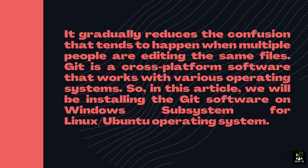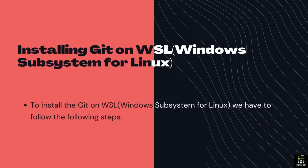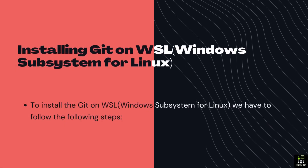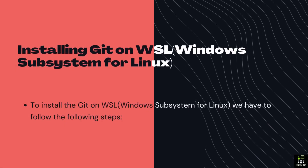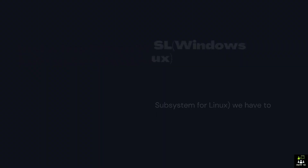In this article, we will be installing the Git software on Windows Subsystem for Linux, or Ubuntu operating system. To install Git on WSL — Windows Subsystem for Linux — we have to follow the following steps.